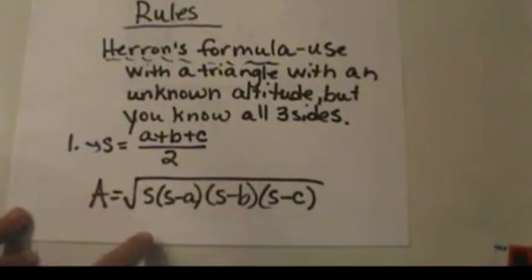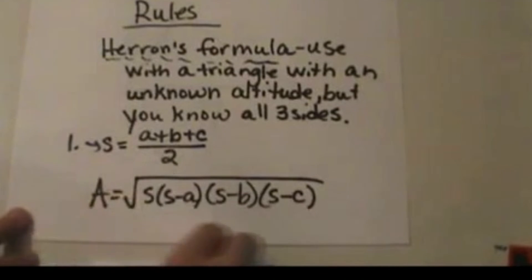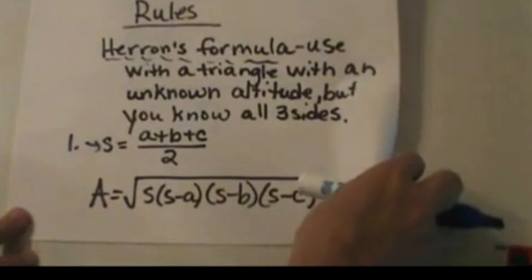It looks complicated, but it's really pretty easy. You multiply that all together, and then you take the square root of it, and that is how you find the area of a triangle.